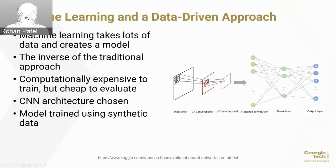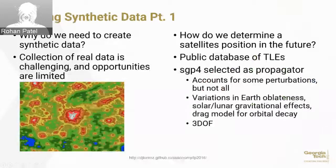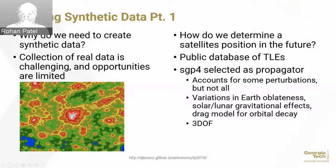Lastly, we have to train using a huge amount of data. We actually don't train using any real data, we use exclusively synthetic data. The question is why would we need to create synthetic data? The answer is that collection of real data is challenging and opportunities are limited. They're limited by weather, by what satellites pass overhead, and crucially by light pollution.